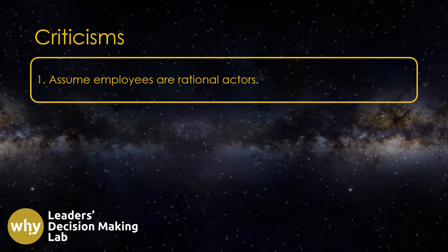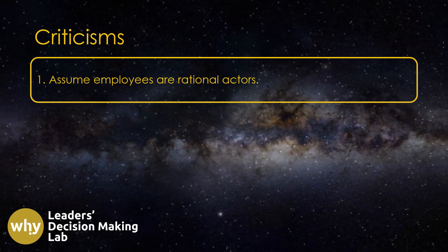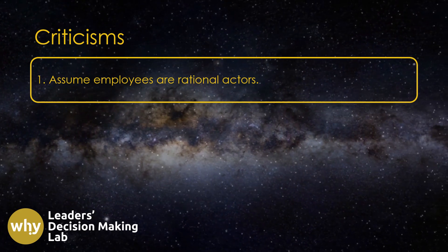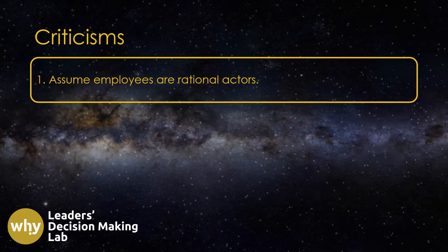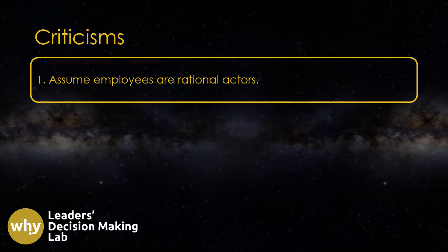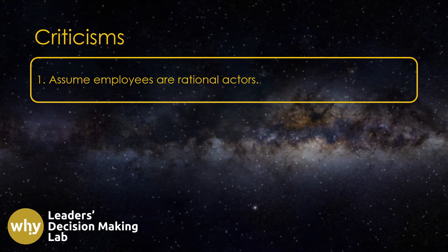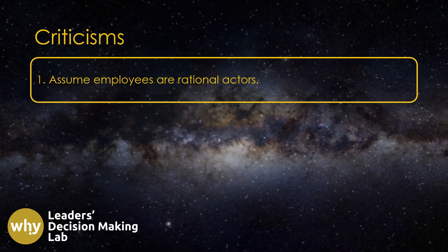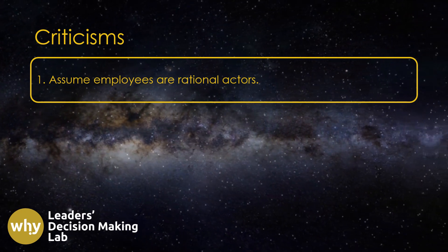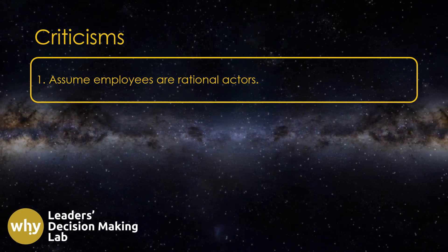No theory is beyond reproach and the Path-Goal Theory of Leadership is no exception. One critique of the theory is the underlying assumption that employees are rational actors who make decisions about effort exertion through a rational decision-making process. While this assumption is central to the theory, it may not always hold in certain situations, such as when employees are under extreme work stress and unable to think rationally. Even Robert House, the theory's architect, recognized this potential limitation and emphasized that the need to consider situational factors may impact the theory's applicability.